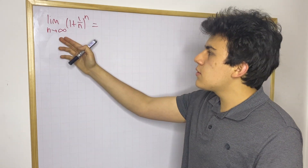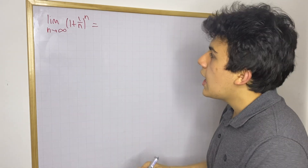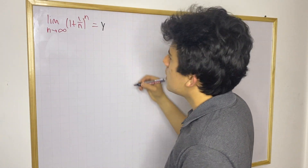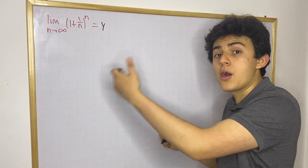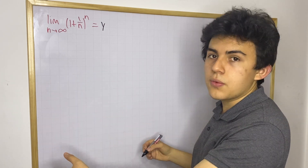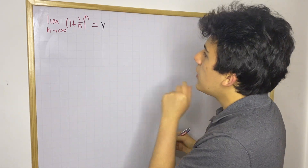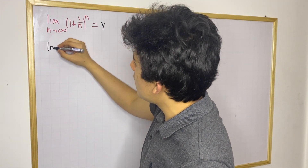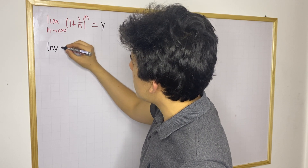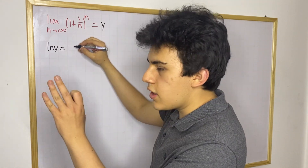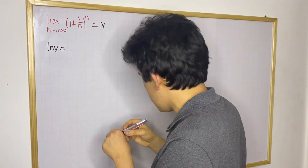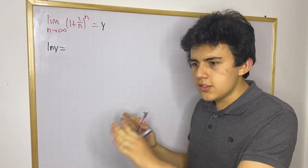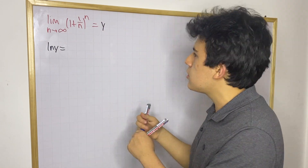What I want to do first is take this limit and let it be equal to y, so that we have a variable we can play with later on. Now what I want to do is the following: I'm going to say that the natural log of y, ln(y), is going to be equal to — and here's an important property that you need to know. I'm not going to prove it, but just take it into account.